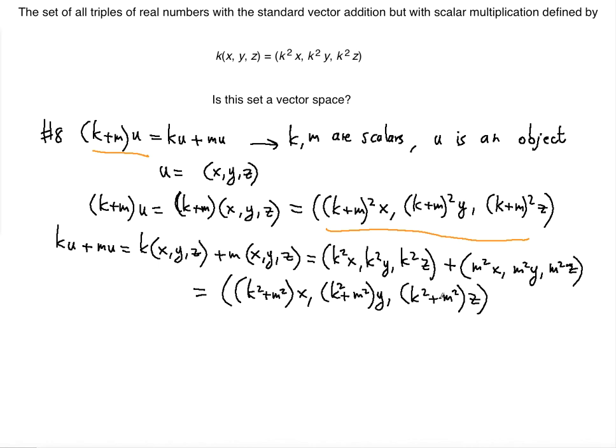You will have K squared plus M squared times X, K squared plus M squared times Y, K squared plus M squared times Z. Now notice this is not equal to this result. How do I know that? Because if you use the FOIL method you will get one extra term. You will get 2KM if you square this properly. And there's no 2KM here. There's only the first term K squared and the last term M squared.